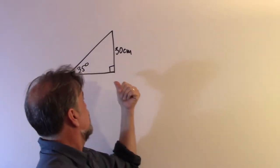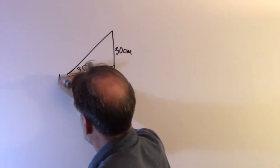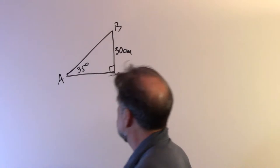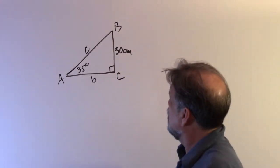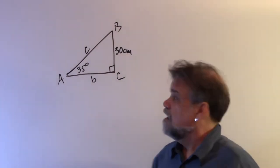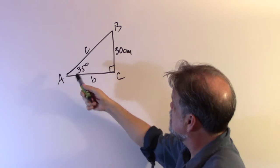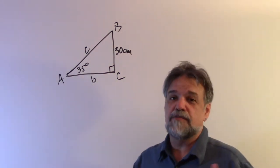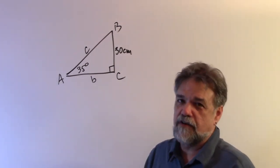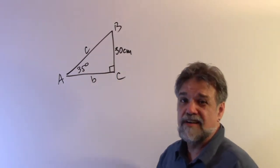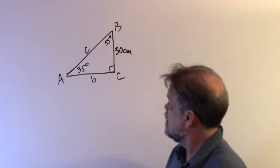I have behind me a triangle. This triangle has an angle of 35 degrees. Let's label our vertices: this is A, this is B, this is C. So I'll call this side b and this side c. That's all I know. Without trigonometry it's very difficult to figure out how long these sides are. One easy thing: the interior angles must add up to 180. With 90 and 35, that leaves 55 degrees.